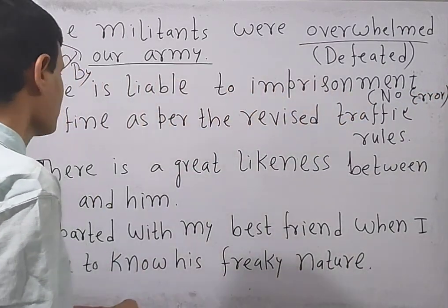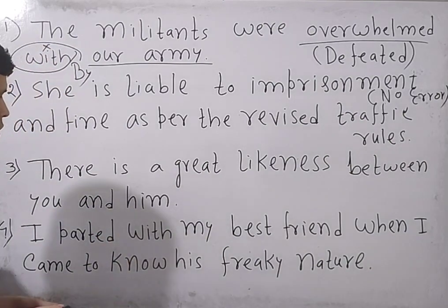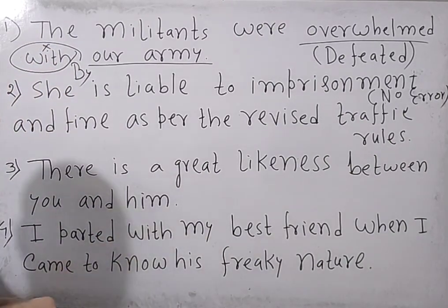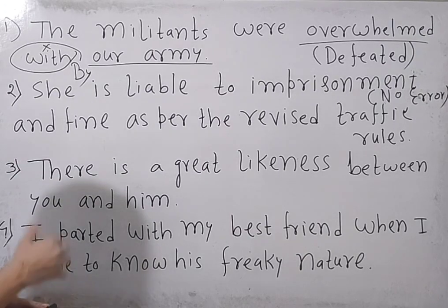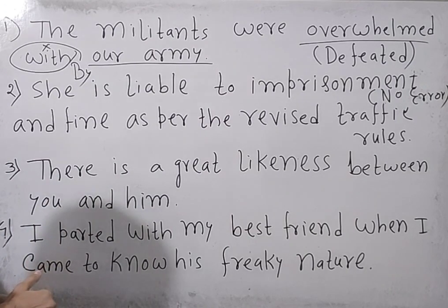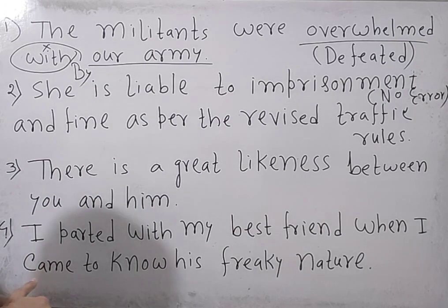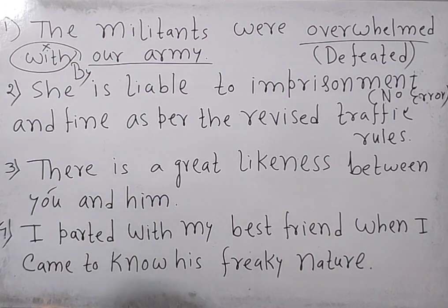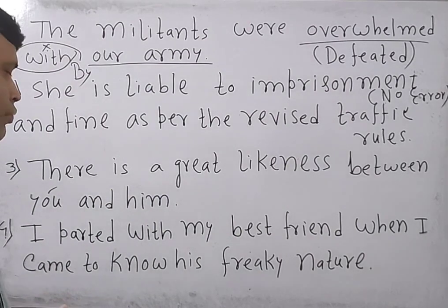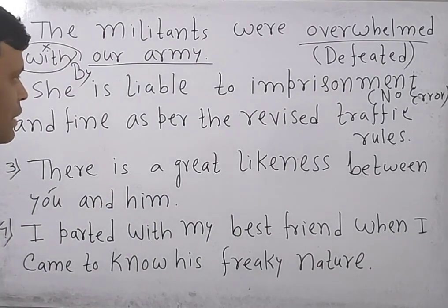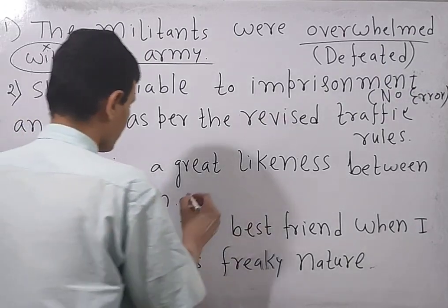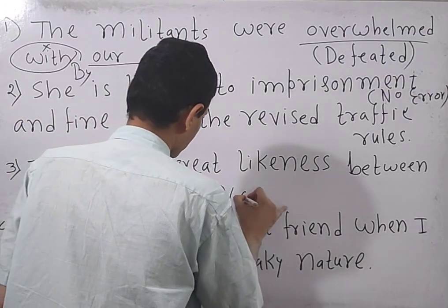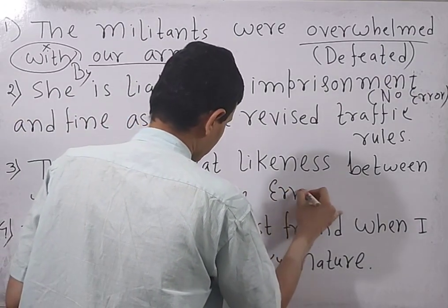Now go to the next question: 'There is a great likeness — meaning similarity — between you and him.' Going through the sentence, 'you' and 'him' are both in objective form. So the sentence does not contain any error; you need to tick the no error option.